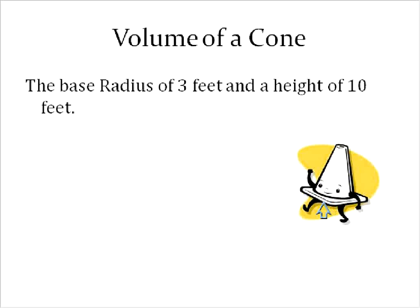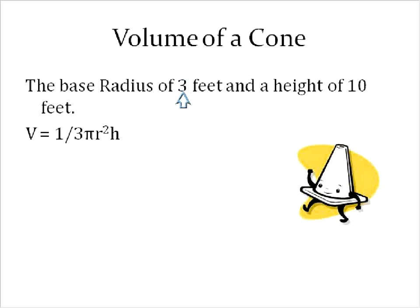Let's go on to a cone. This is going to be a weird shaped cone — maybe on top of a car or something. But let's just go ahead and say that we have one. We're going to find the area of the base, which is pi r squared, so we're going to need the radius. The base radius is 3 feet and the height is 10 feet. We need both the radius and the height for the volume of a cone equation. The equation is: the volume is equal to 1 third times pi r squared times the height.